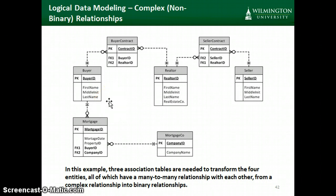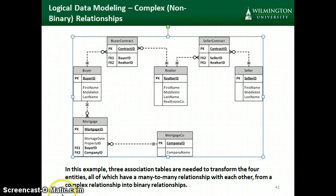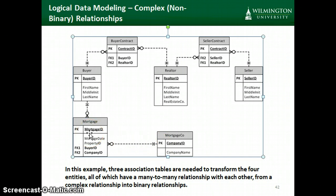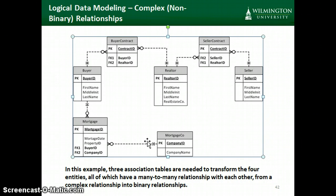The buyer has some sort of relationship with the mortgage company. And if a buyer has more than one mortgage, we need to set up an association entity again, because we know the mortgage company is going to be dealing with more than one buyer. So if a buyer has more than one mortgage, that's another many-to-many relationship. In this case, the surrogate key might be called the mortgage ID, and there'd be a foreign key to match back to the buyer and a foreign key to match back to the mortgage company.